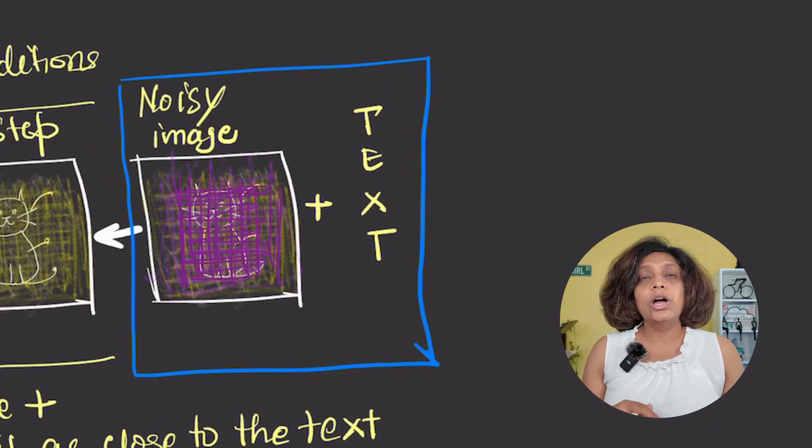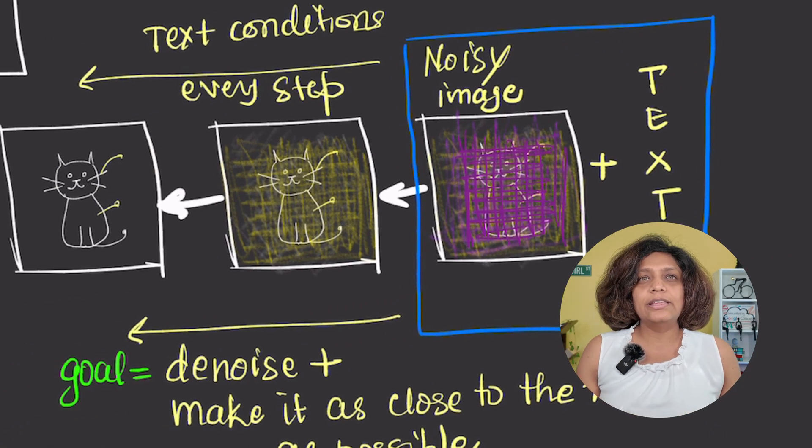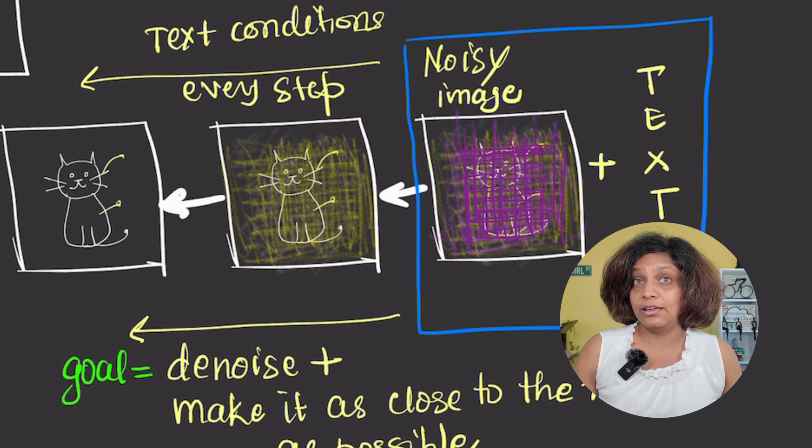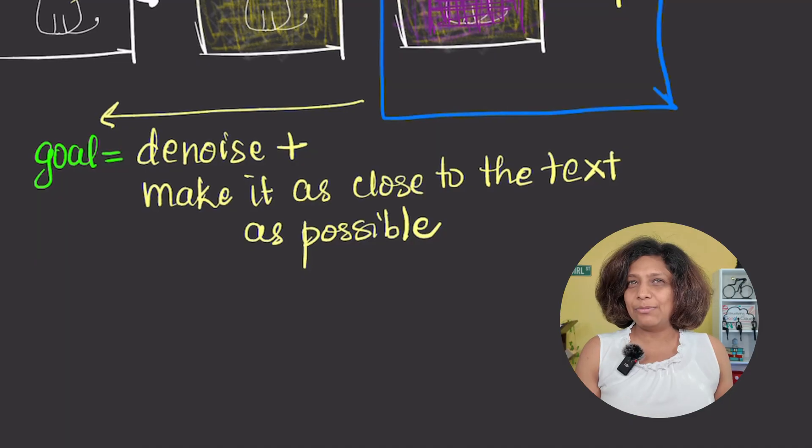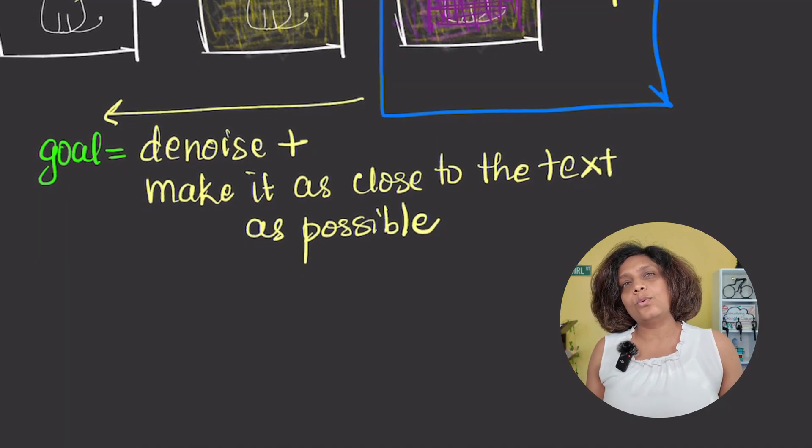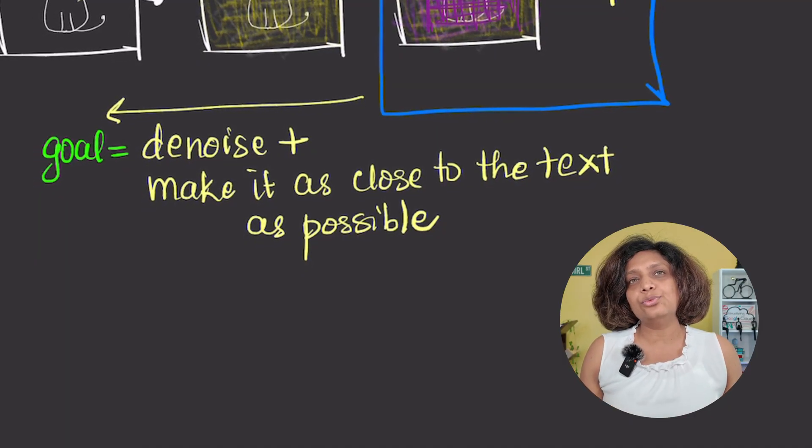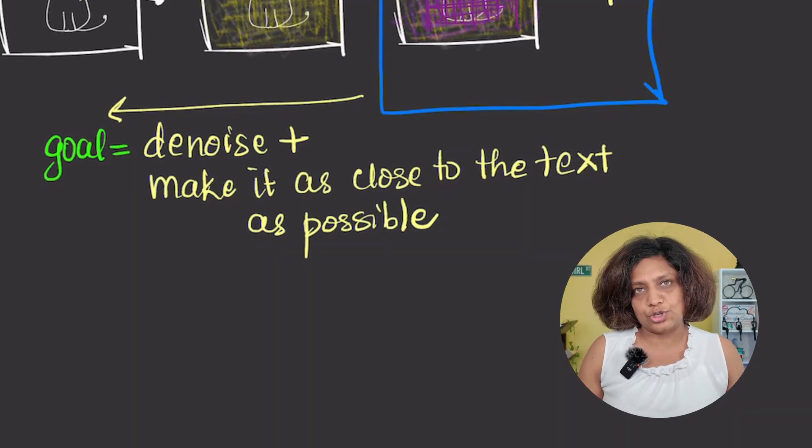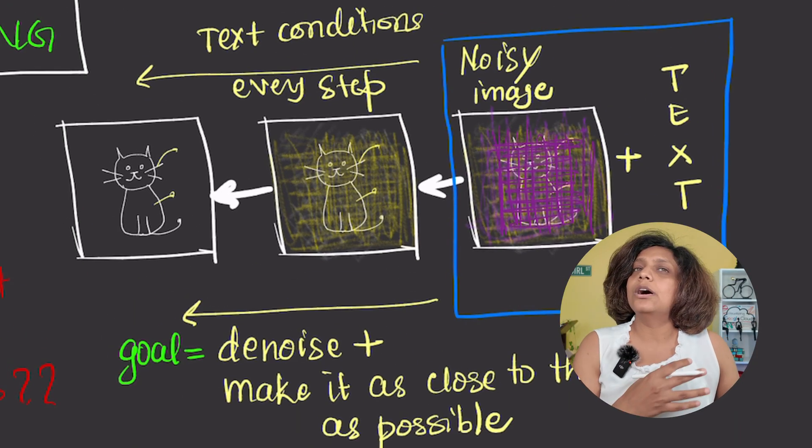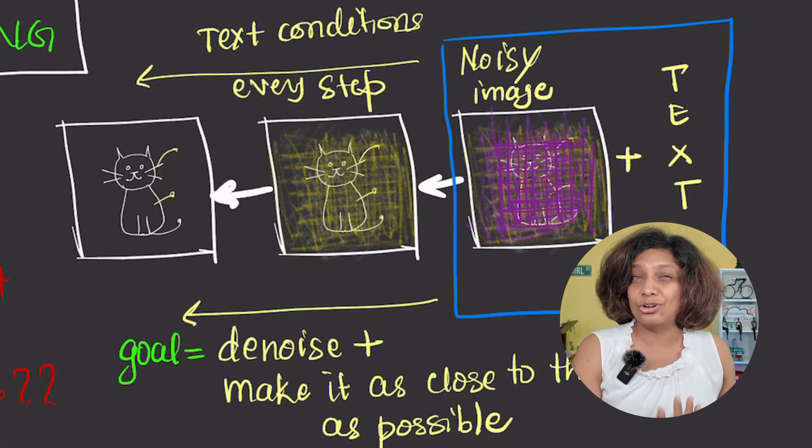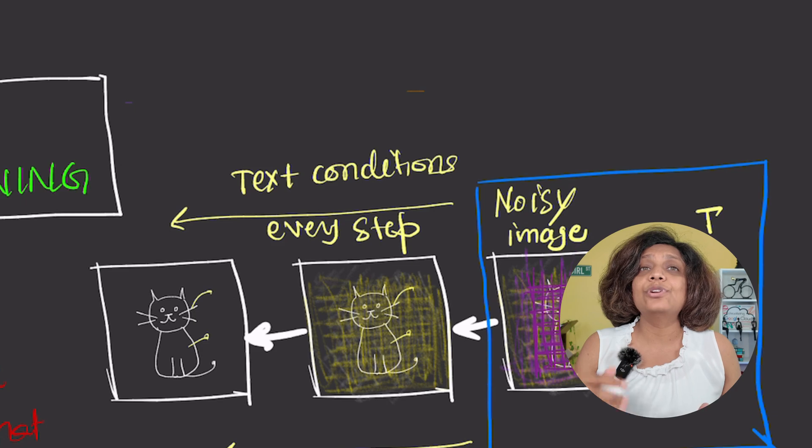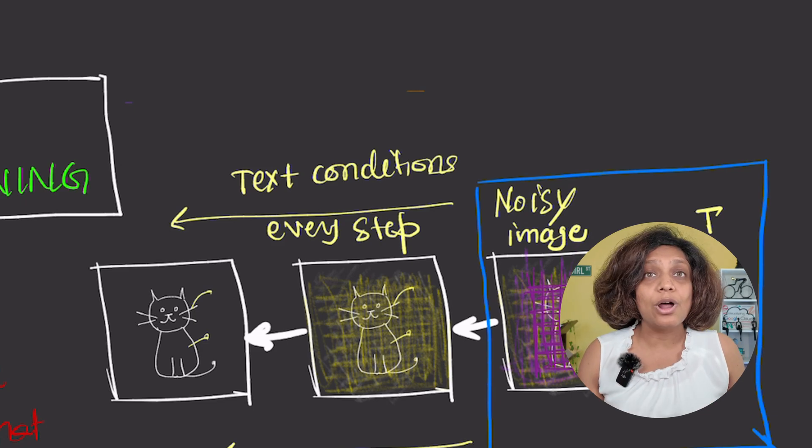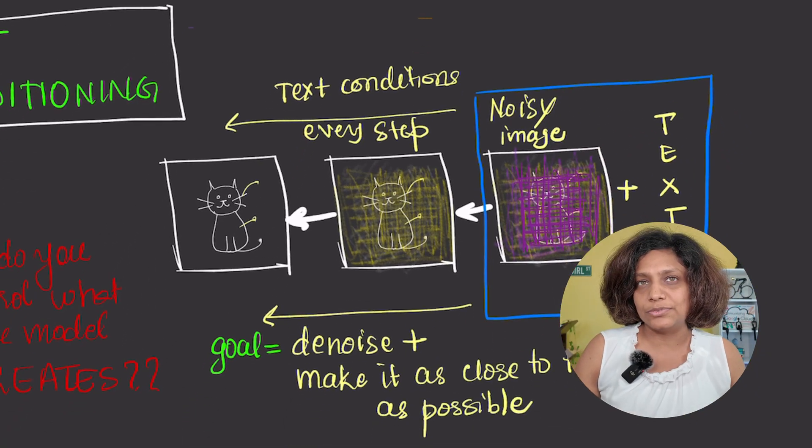The U-net's goal isn't just to denoise the image, but to denoise it in a way that steers the final result towards matching the text description. When we run our progressive generation starting from pure noise, the text conditions every single step of the denoising process, guiding that chaos into a coherent image that matches our prompt.